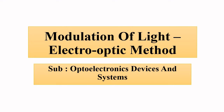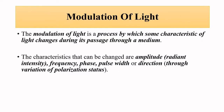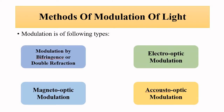Hello friends, welcome to Engineering Tutorial. We will continue our discussion related to optoelectronic devices and systems. In the previous video we discussed about the double refraction birefringence method of modulation of light. In this video we are going to discuss about another external method of modulation of light. Modulation is the process of changing one of the characteristics — amplitude, frequency, or phase — of the electric field vector component of the light wave.